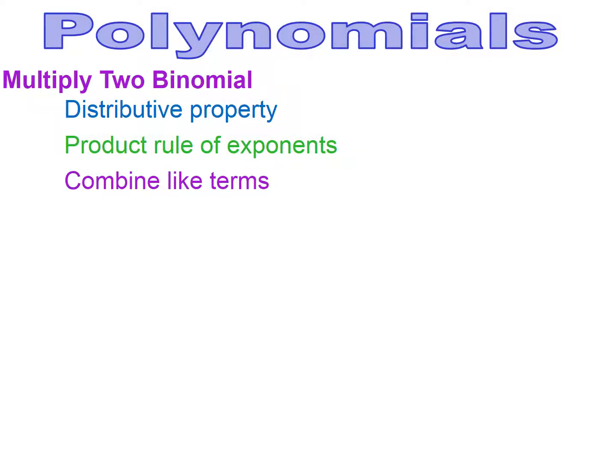Polynomials — multiplying two binomials. When you multiply two binomials together, we're going to be using the distributive property and the product rule. The product rule is when you multiply like bases together, you add the exponents. And then lastly, you'll be combining like terms, where like terms have the same variable with the same exponent.